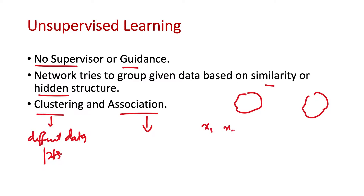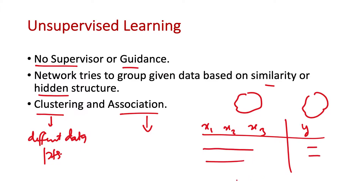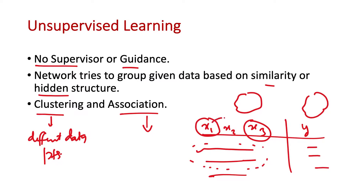For example, if we have three parameters x1, x2, x3 and we are predicting y with multiple records, clustering would try to group similar data points together, whereas association would try to find that x3 is highly linked to x1 — so whenever x1 is present, x3 is also likely to be there. This is the difference between clustering and association, and these both fall under the category of unsupervised learning.